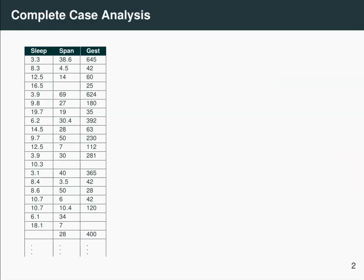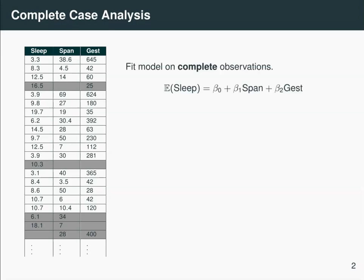One common way to analyze data with missing values is to only look at those cases that have complete observations. So we would discard these mammals that have some form of missing values, and using just the complete observations, you would fit the model.